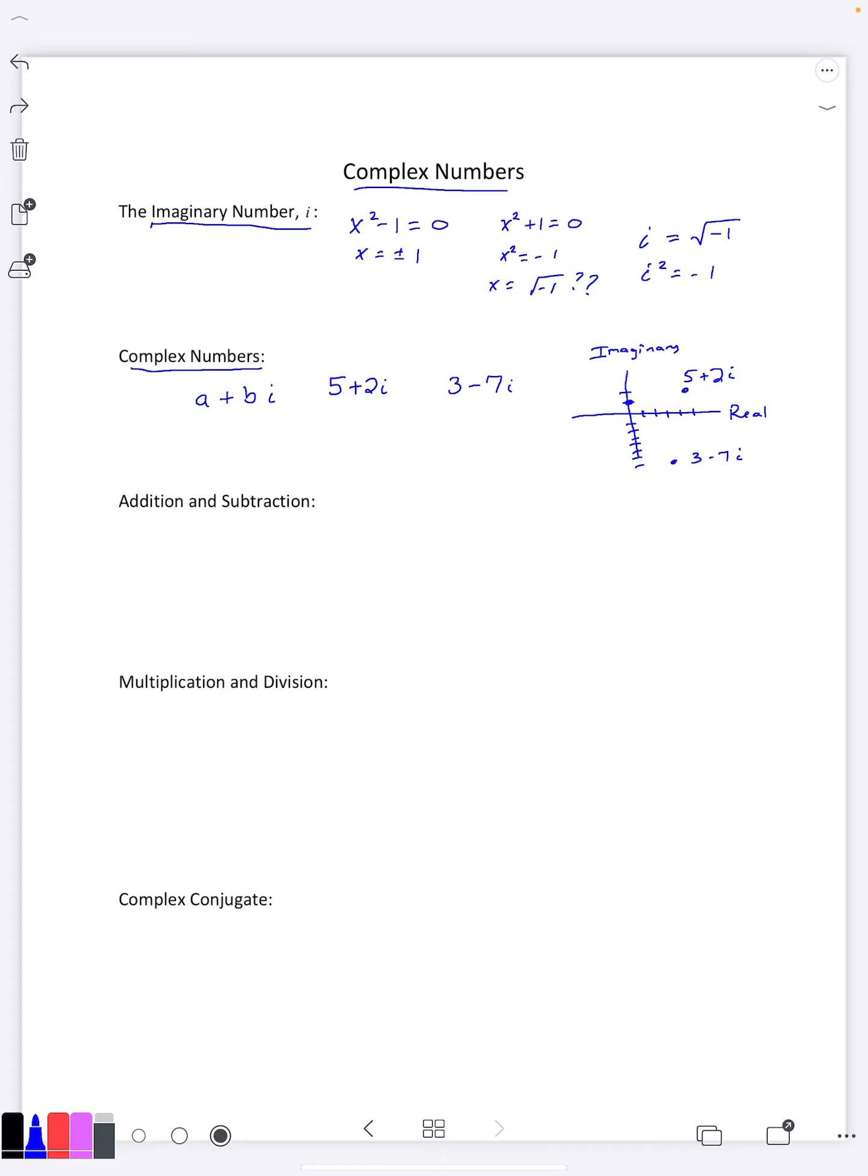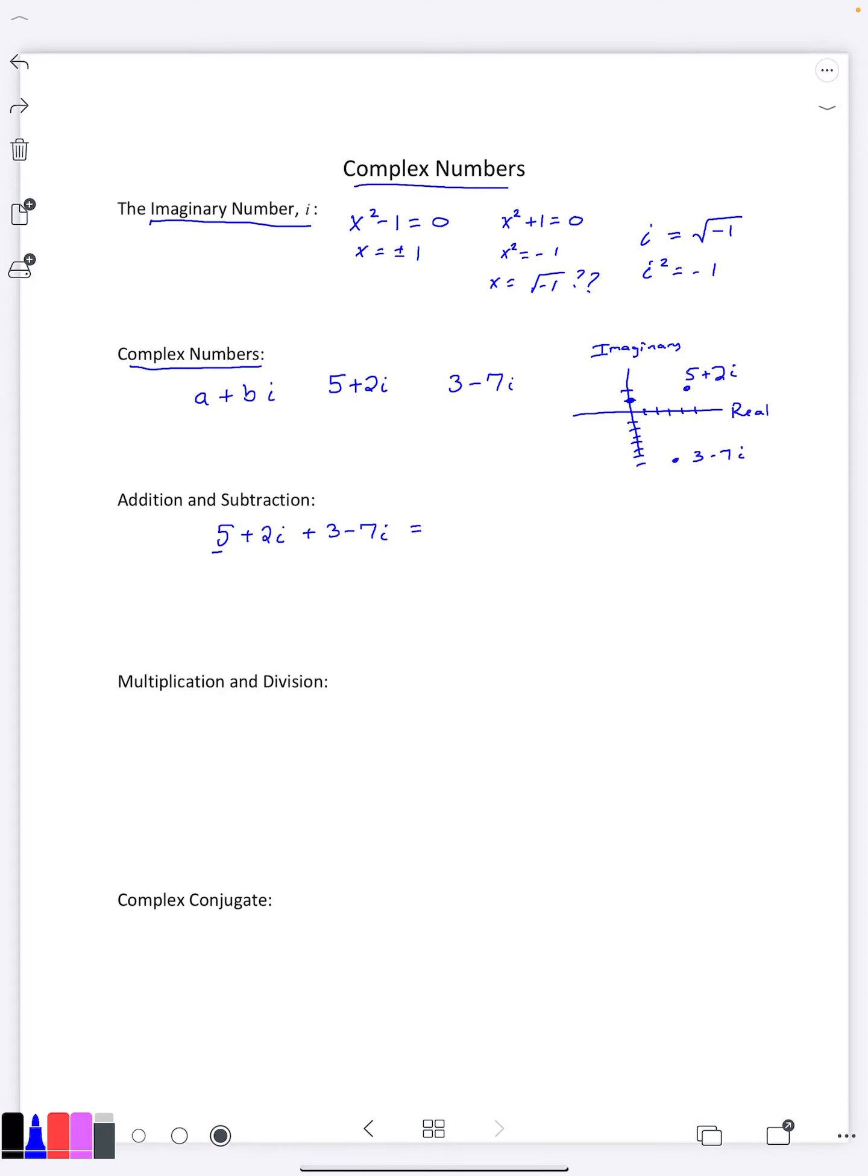Well now that we have complex numbers, what can we do with them? We can add them, we can subtract them. And the nice thing is you're just going to add them the same way you'd add any other numbers. You're just going to use like terms. So the 5 does not have an i, the 3 does not have an i, we can combine them. 5 + 3 is 8. And then the two terms that do have i, those are like terms. 2i - 7i is a negative 5i. And this would be the answer to adding up these two complex numbers.